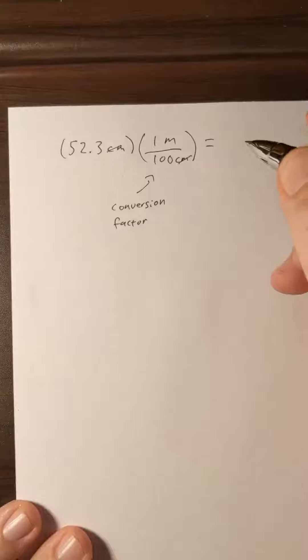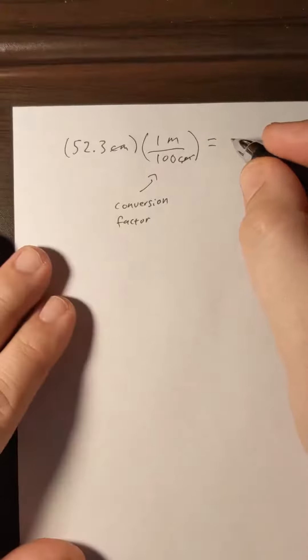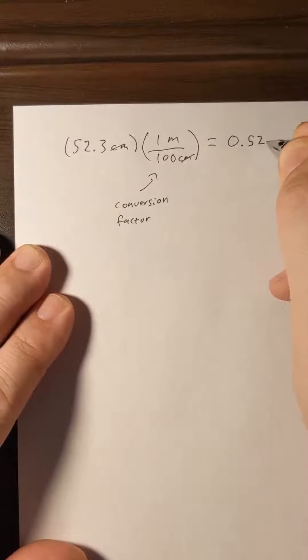And so when we ask our calculator to do this, we should get a result of 0.523 meters. Now because our conversion factor doesn't change our number of significant figures, we still have the three significant figures that we started out with. So this is our final answer, 0.523 meters.